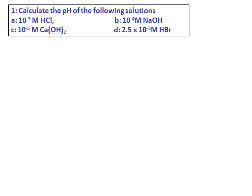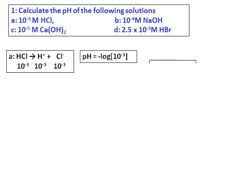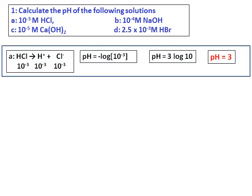Calculate the pH of the following solutions. We are given 10 to the power of negative 3 molar HCl, 10 to the power of negative 4 molar NaOH and 10 to the power of minus 5 molar calcium hydroxide, 2.5 times 10 to the power of minus 3 molar HBr. So the first question, HCl being a strong acid, ionizes completely. Therefore, the concentration of the hydrogen ion will be the same as concentration of HCl and substituting in the value for concentration of hydrogen in the pH equation I get pH is equal to 3.